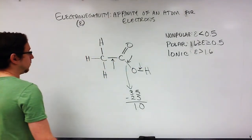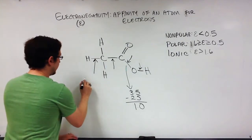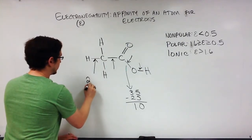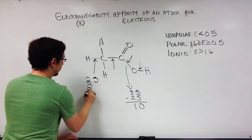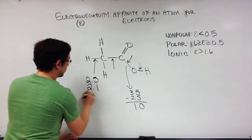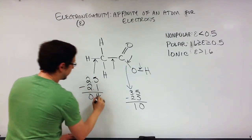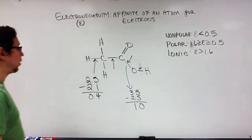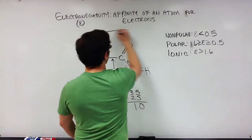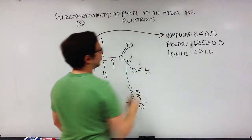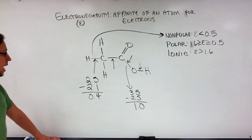If we look at carbon and hydrogen: carbon has an electronegativity of 2.5, hydrogen has 2.1, giving a difference of 0.4, which falls into the nonpolar range. So that is a nonpolar covalent bond.